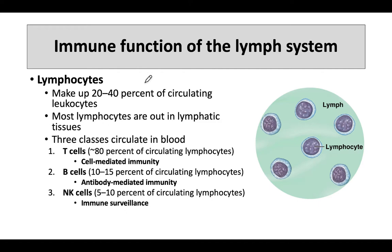Lymphocytes are part of the lymph system and part of the immune system. These are cells that are produced in the bone marrow — that's where they begin their life, and then they mature elsewhere. If they are T cells, they mature in the thymus. B cells do continue in the bone marrow.